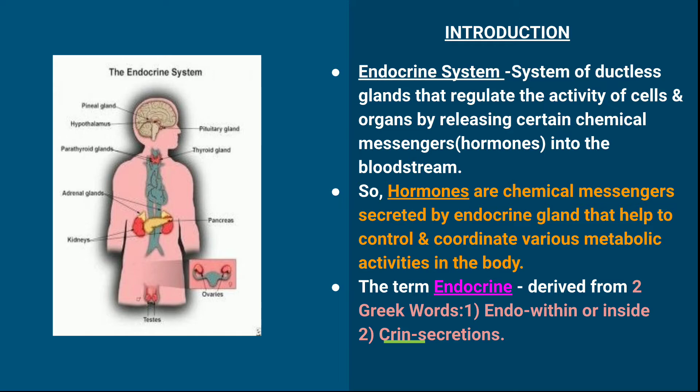These chemical messengers are known as hormones. These ductless glands secrete hormones which regulate the activity of the cells and organs of our body. These hormones are released directly into the bloodstream without being transported by ducts — that is why they are called ductless. Their secretions go directly into the bloodstream.